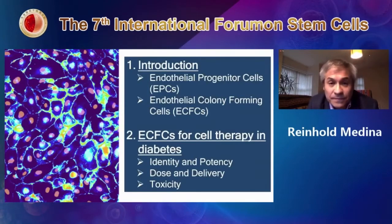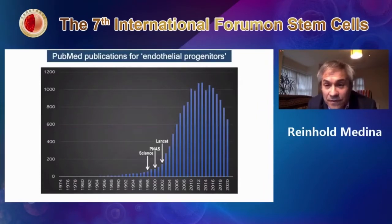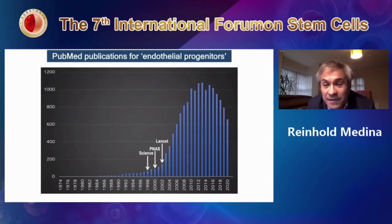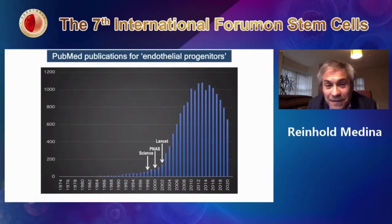The field of endothelial progenitors really started in the early 2000s with three milestone papers, after which there was an immense increase in publications related to vascular repair and endothelial progenitors — reaching even a thousand papers per year. Now that number is declining, and there's a bit less interest in these cells. You'll probably understand why in the next slides.